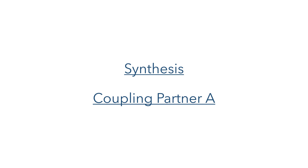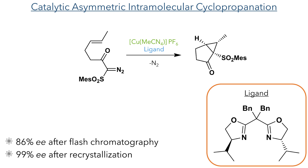So let's start with the synthesis of coupling partner A. This starts with a catalytic asymmetric intermolecular cyclopropanation catalysed by tetrakis(acetonitrile)copper(I) hexafluorophosphate together with a chiral bisoxazoline ligand, which are more commonly known as box ligands. This produced the target cyclopropane in an 80% enantiomeric excess after chromatography, which upon recrystallisation was purified to 99% EE.